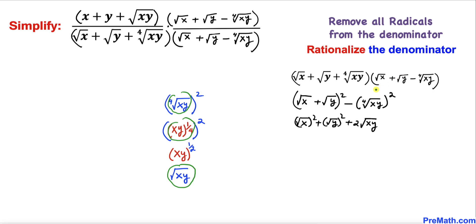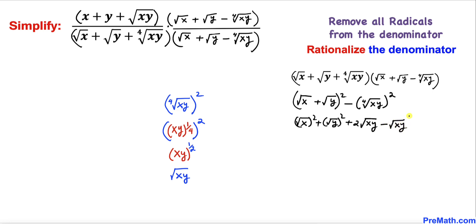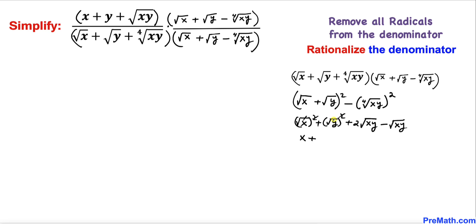We replace the fourth root of x y squared term with square root of x y, giving us negative square root of x y. Combining those terms with the two times square root of x y term from the expansion, we simply get square root of x y. So the whole denominator simplifies to x plus y plus square root of x y.